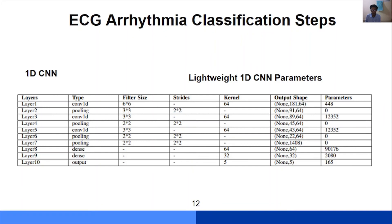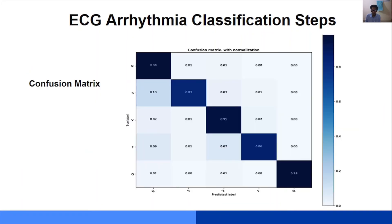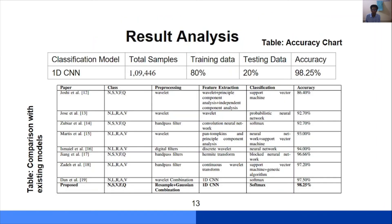Here is the confusion matrix which we got after classification, where the N, S, V, F, Q beats have got individual accuracy of 98%, 83%, 95%, 86%, and 99%. For result analysis, we got an accuracy of 98.25 percent based on our training of 80 percent of data and testing data of 25 percent. Here we show the comparison with existing models. In accuracy we can see that our proposed model got 98.2 percent which beats all the accuracy of existing models. Also we can say that our model is much more lightweight than existing models.